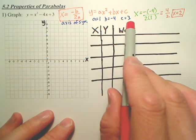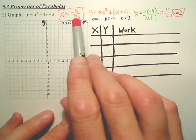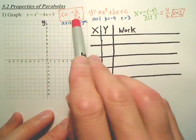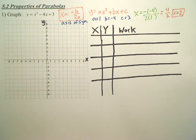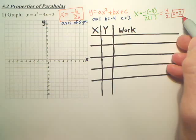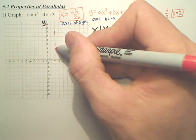Again, a, b, c's. We don't even need c for what we're dealing with right now. Negative b over 2a. Now, this formula you're going to have to memorize. What we do is we graph x equals 2. There's x equals 2. We do a dotted line.